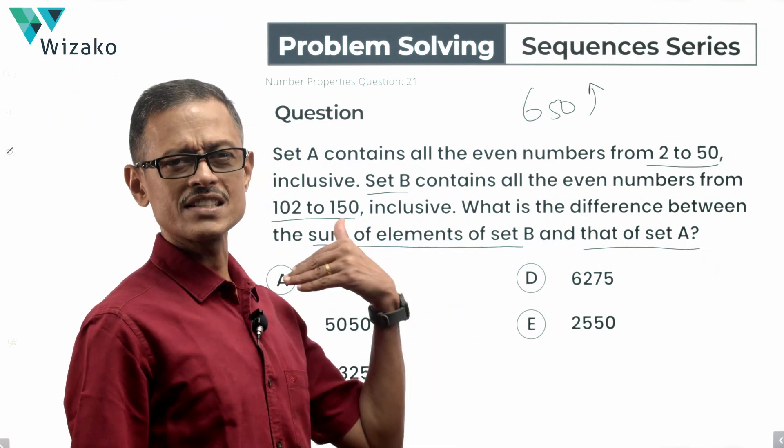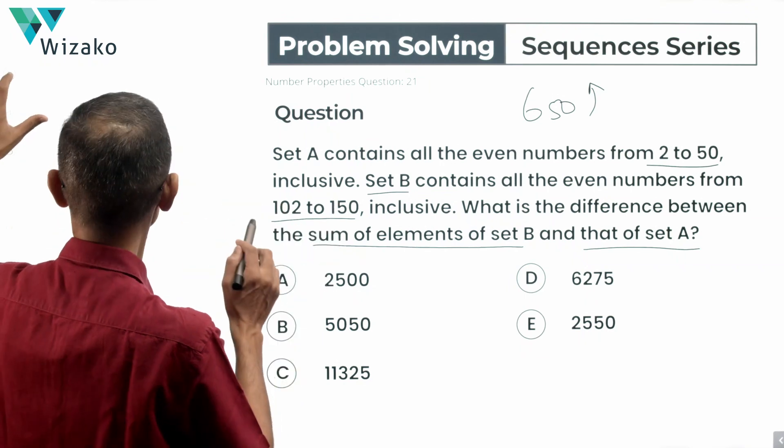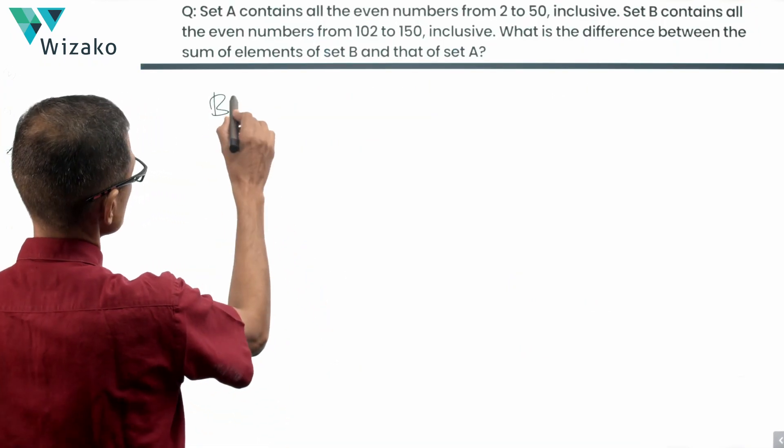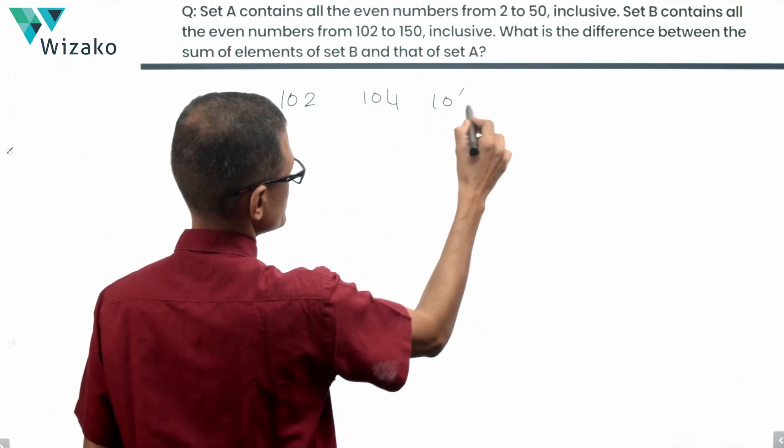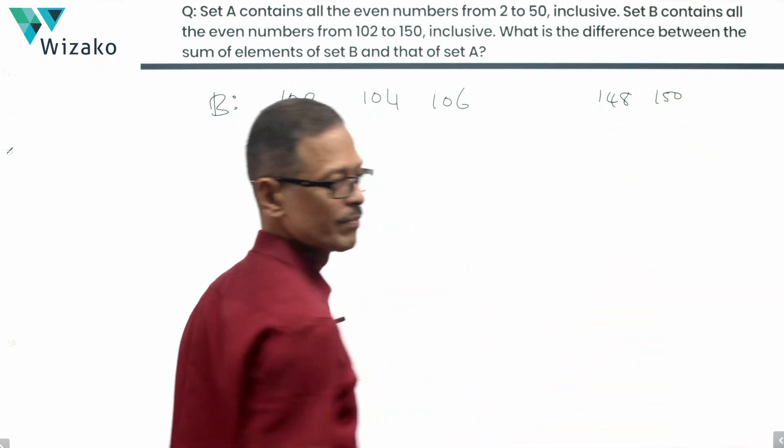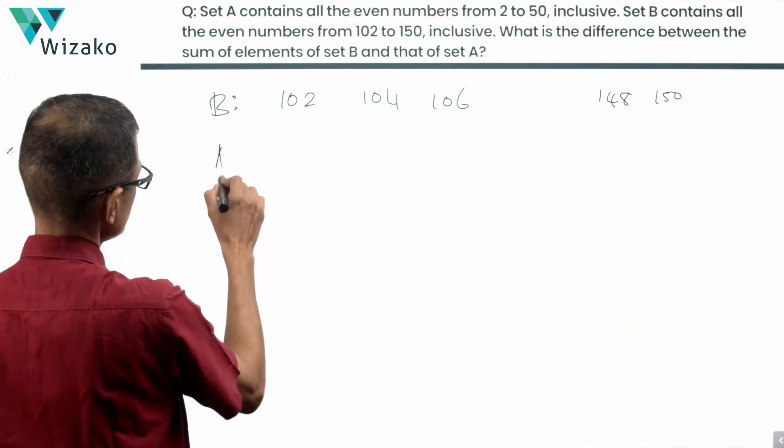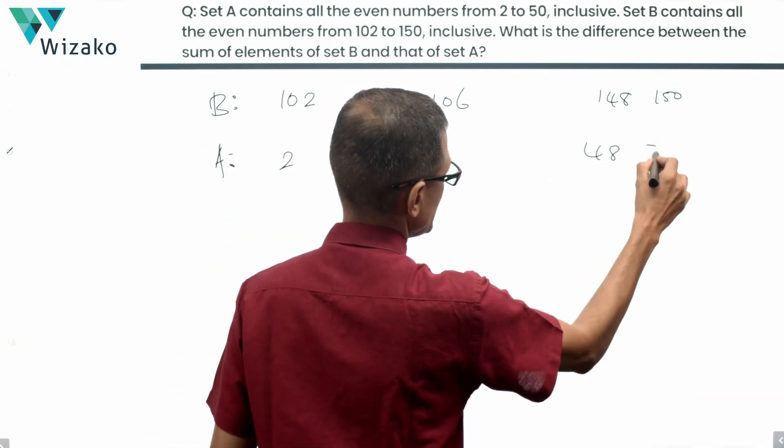Method 1: We will start by listing down elements of set B. Set B starts from 102 all the way up to 150 even numbers, so this is what set B is going to comprise: 102, 104, 106, 108, all the way to 148, 150. What does set A comprise? Set A starts from 2, 4, 6 all the way up to 48 and 50.